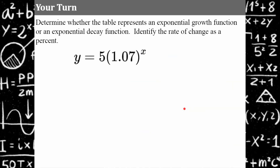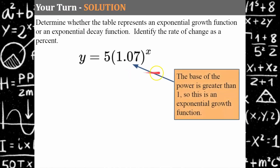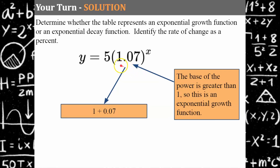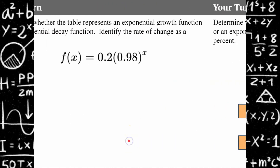Now we have an equation. I'll model this one. We want to determine whether this represents an exponential growth or decay function and identify the rate of change as a percent. The base of the power is greater than 1, so this is an exponential growth function. The rate of change is 7% because 0.07 is seven percent — exponential growth is 100% of the initial amount plus the rate of change.